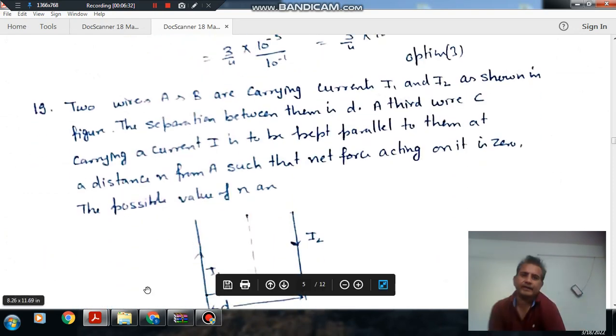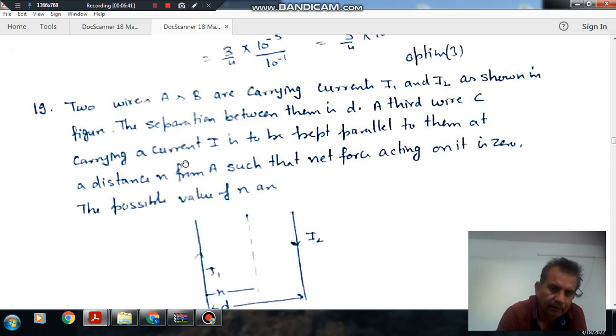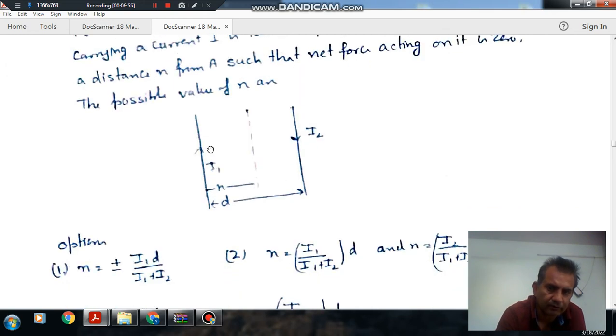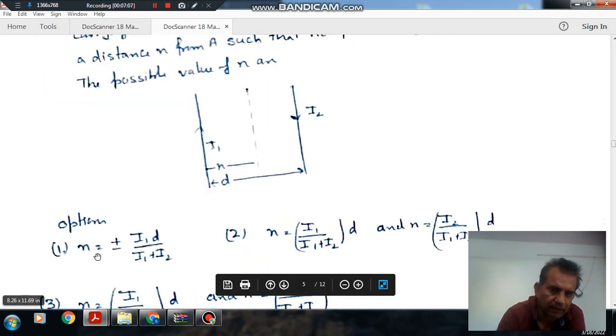Next, two wires A and B carrying currents I_1 and I_2 as shown in the figure. The separation between them is D. A third wire C carrying a current I is to be kept parallel to them at a distance X from A such that the net force acting on it is zero. The possible value of X is to be found.